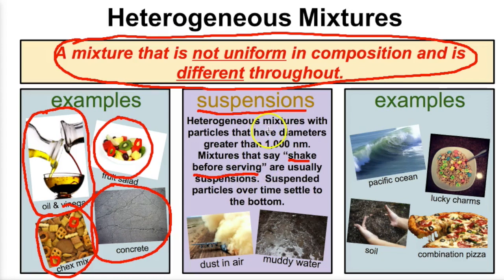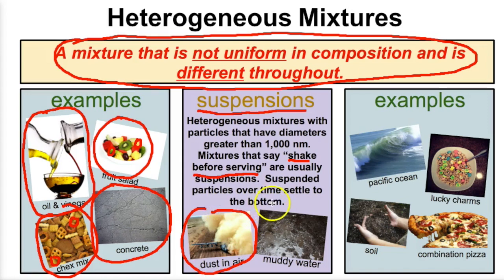For example, if you buy orange juice with pulp in it, over time that pulp is going to settle to the bottom — that's a suspension. If we take a look at dust in air, that's going to be an example of a heterogeneous mixture. Muddy water is also going to be an example of a heterogeneous mixture or a suspension.